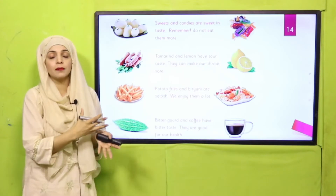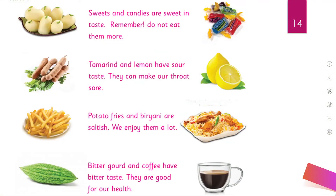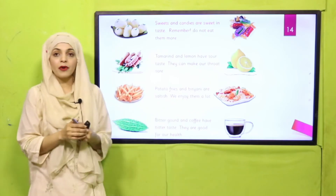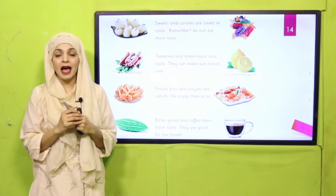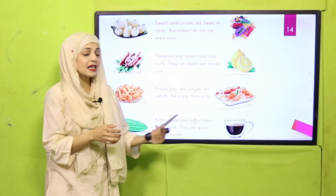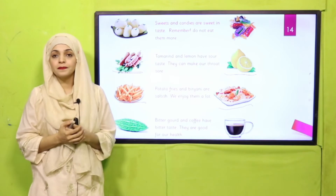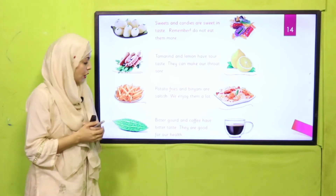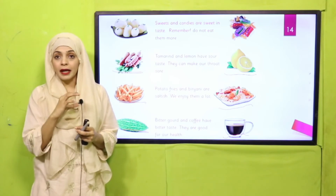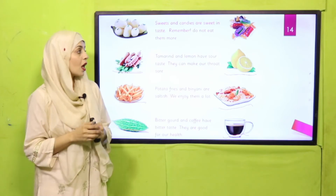On the same page you can see a few food items. Tell me their tastes. Sweets and candies — they have a sweet taste. Tamarind and lemon — they have a sour taste. Fries and biryani — they have a salty taste. Bitter gourd (karela) and coffee — they have a bitter taste.